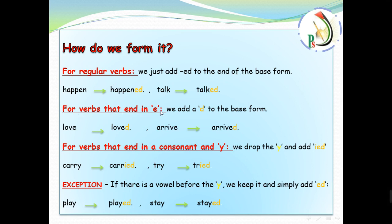For verbs that end with 'e', so the 'e' is already here, we add just a 'd' to the base form. Love, simply loved. We didn't add or we don't add another 'e'. Just the same 'e' and we just add 'd'. Love, loved. Like, liked. Arrived, arrived. And so on.